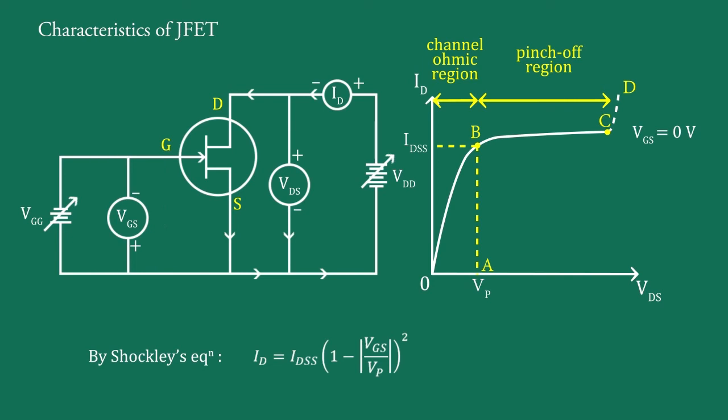Now, if the gate is made negative with respect to the source and the drain source voltage is once again varied from zero to breakdown, the curve is of a similar shape but shifting down. Apparently, a negative voltage on the gate has reduced drain current.